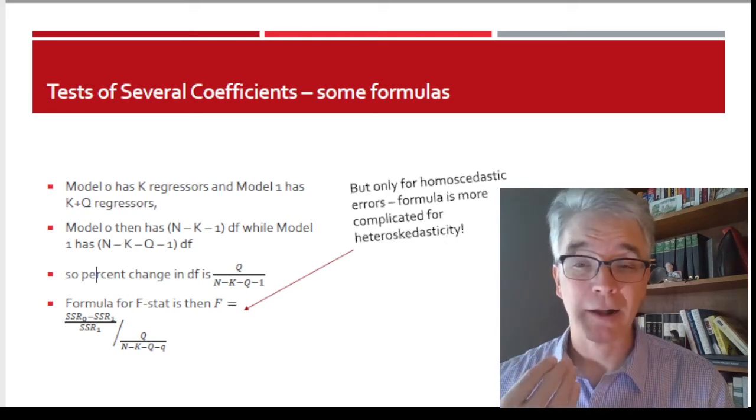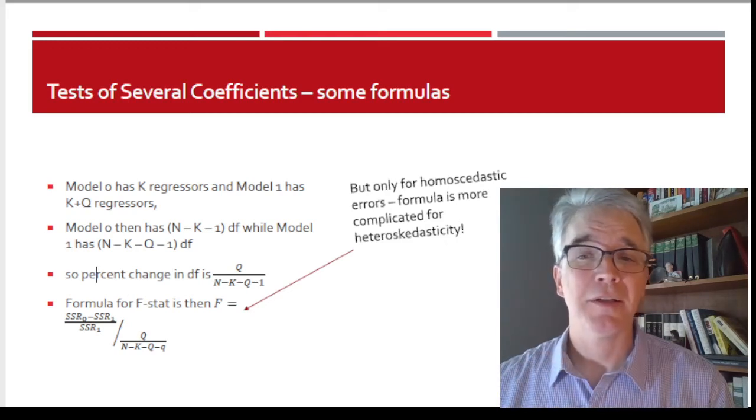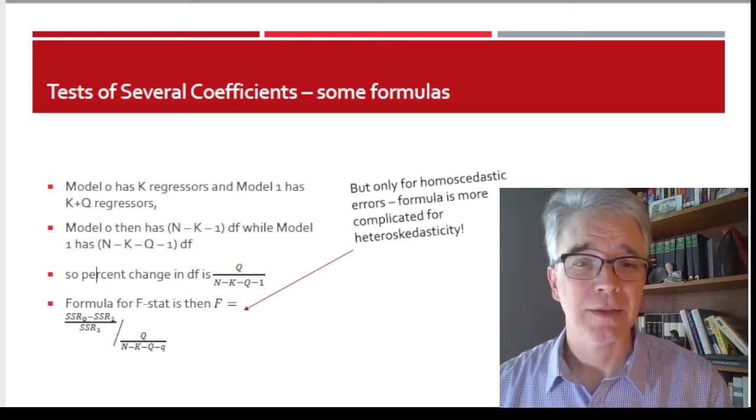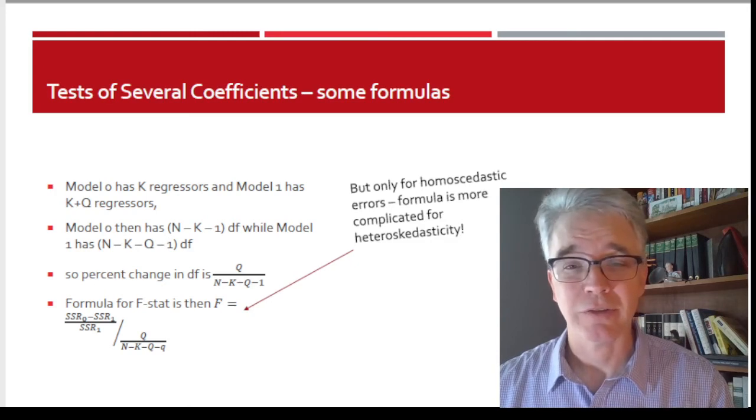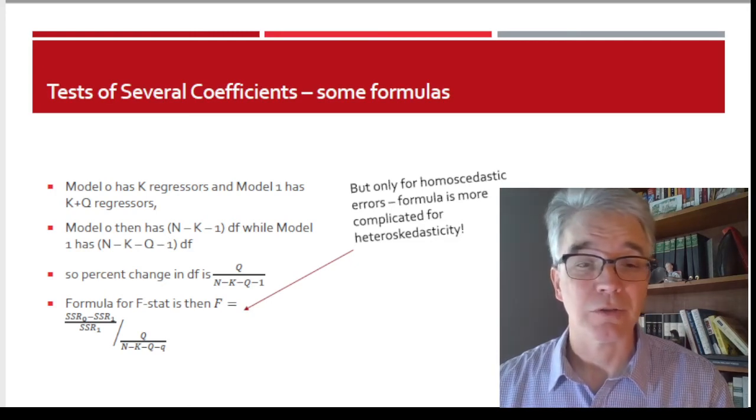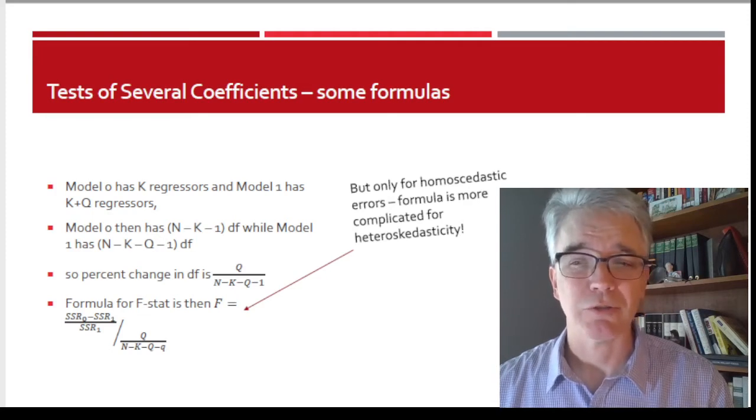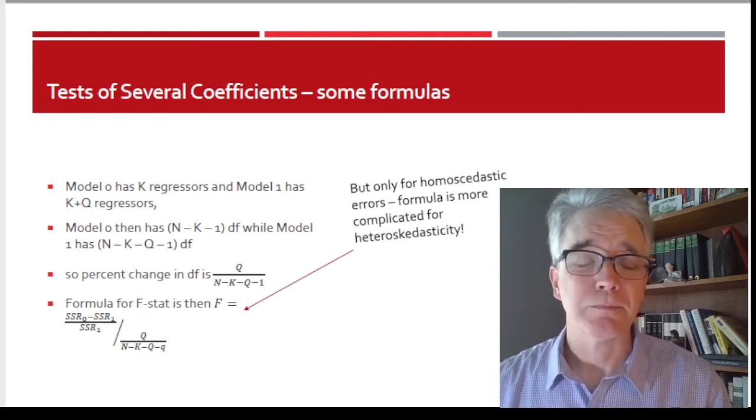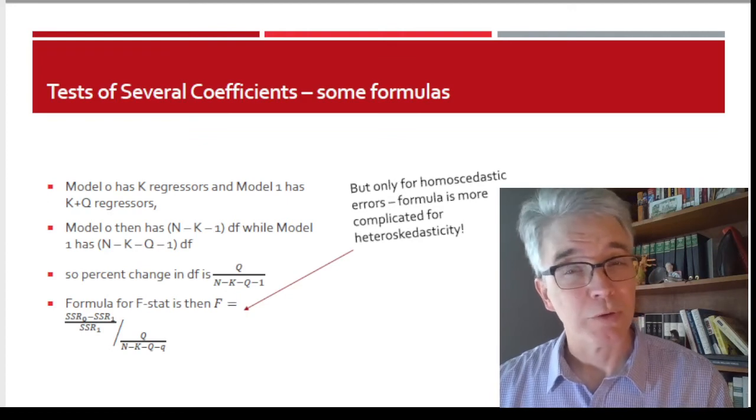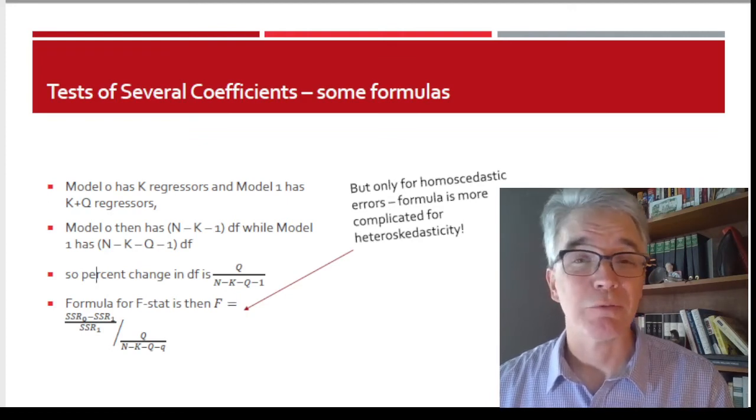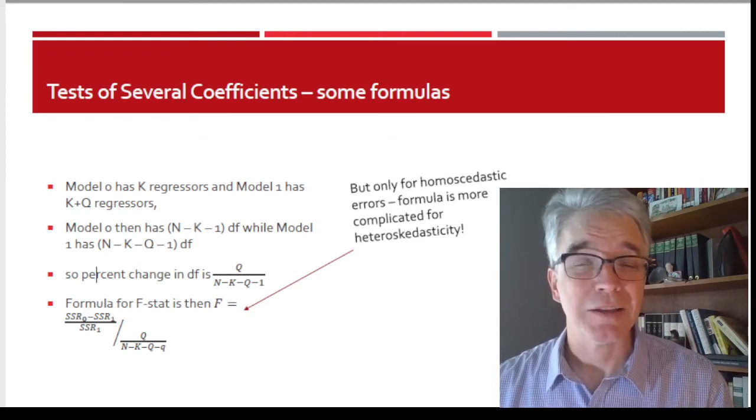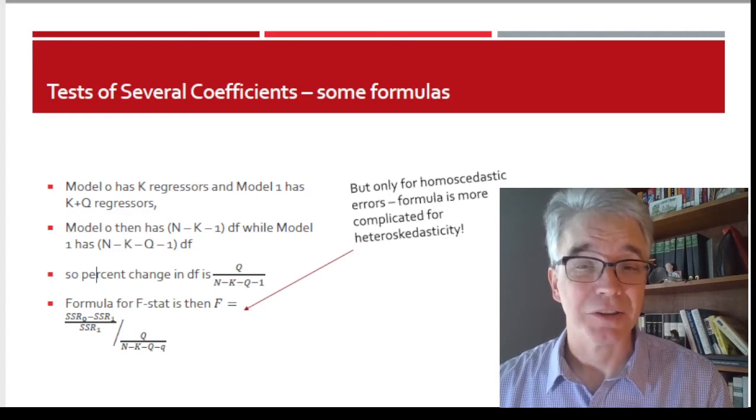Now, I'm then going to back off and say, well, that's only if I have homoscedastic errors. In the presence of heteroscedasticity, that formula is going to get ugly. More complicated, just generally ugly. So, what is the point of doing that formula? The point of doing that formula is just kind of remind yourself that what we're basically doing is some sort of elasticity-type calculation.